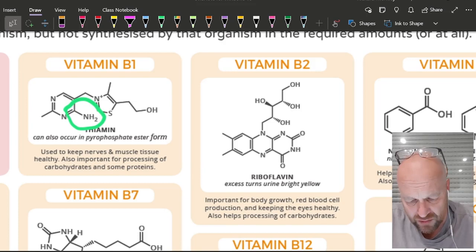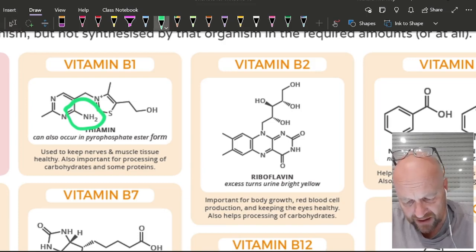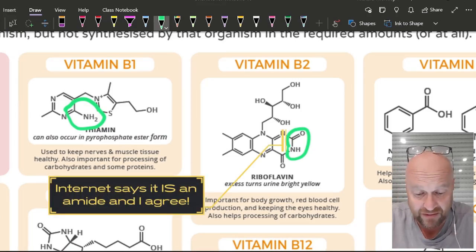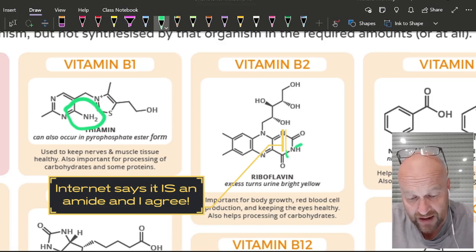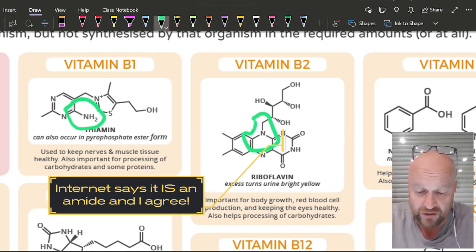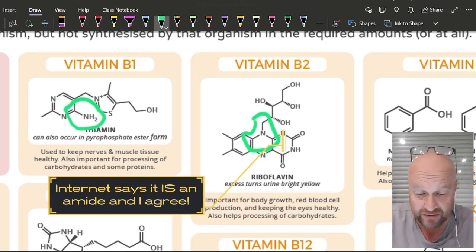Vitamin B2. Again, you might be tempted to think that's an amide, but that seems to not be an amide, beyond the IB definition. The IB definition has two hydrogens coming out of that nitrogen. But there is an amine, there's the amine, tertiary amine, nitrogen with three carbons attached.